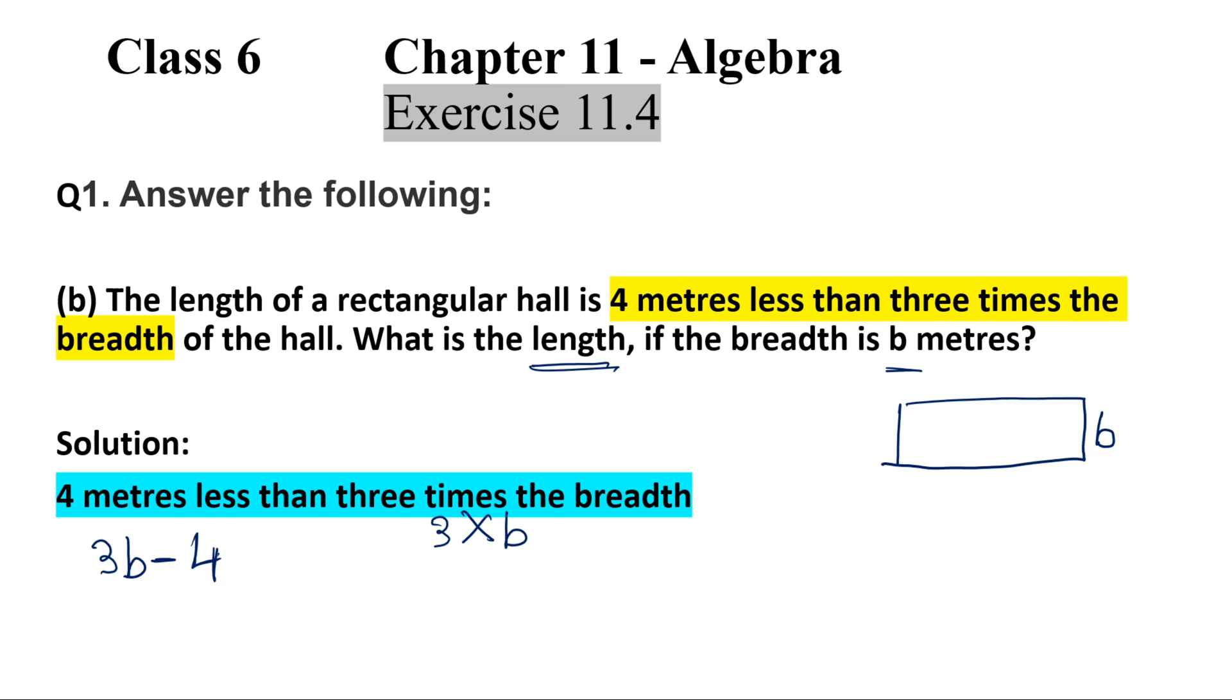Now, see, read it again. 4 meters less than 3 times the breadth. Okay. So, that's the solution. 3b minus 4 meters.